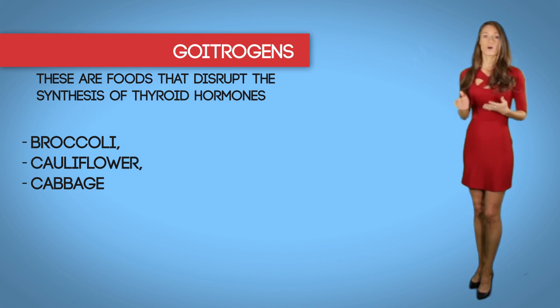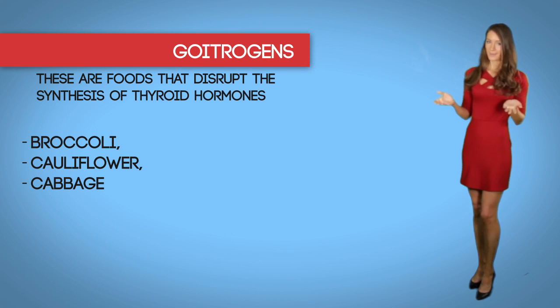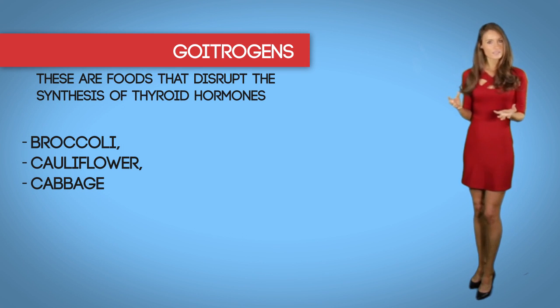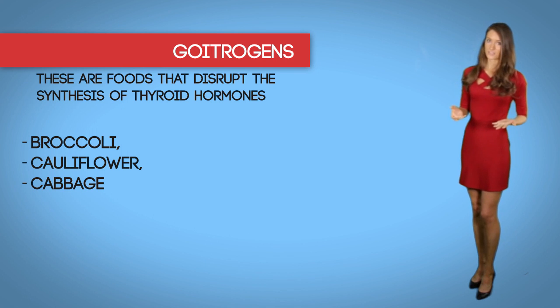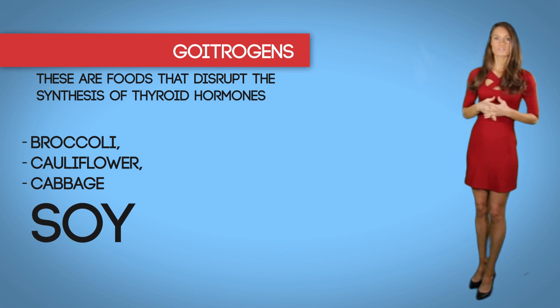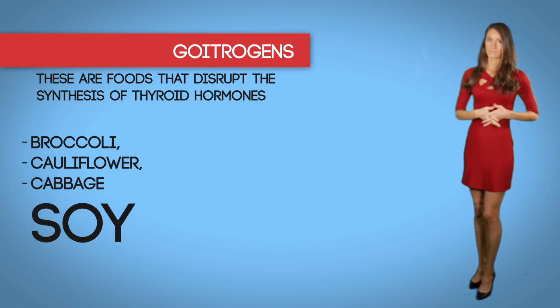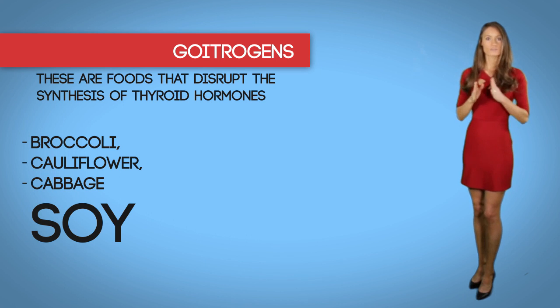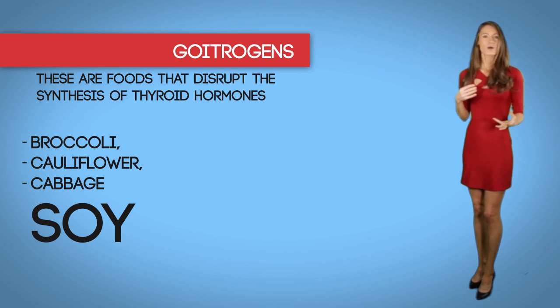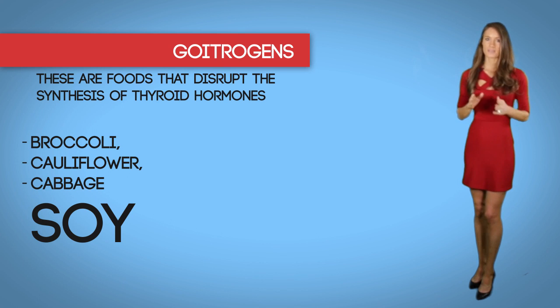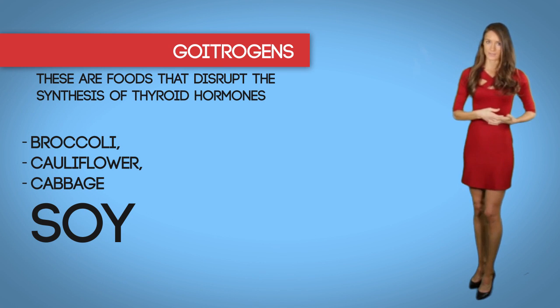Goitrogens are foods that disrupt the synthesis of thyroid hormones. Vegetables such as broccoli, cauliflower, and cabbage naturally release a compound called goitrin when they're hydrolyzed (broken down) in the body, so excessive intake could cause complications. Soy is another potential goitrogen — the isoflavones in soy can lower thyroid hormone synthesis, but numerous studies have found that consuming soy doesn't cause excessive blockage that would lead to hypothyroidism.